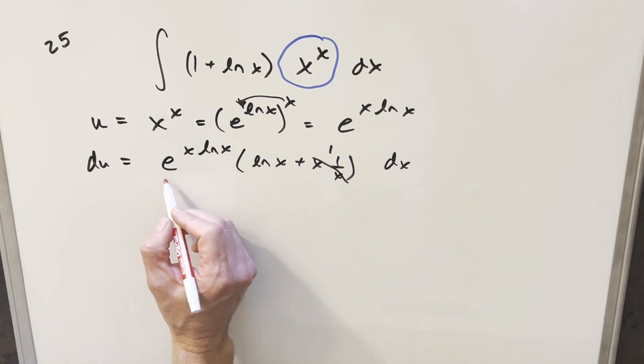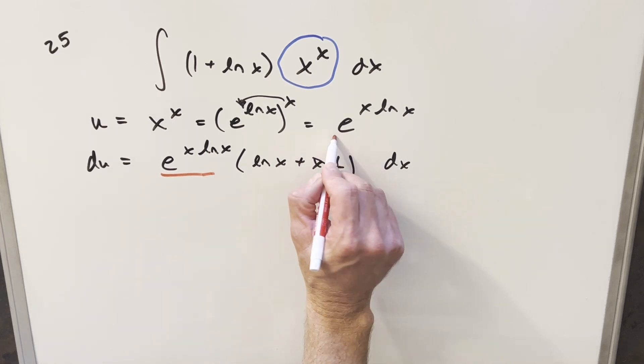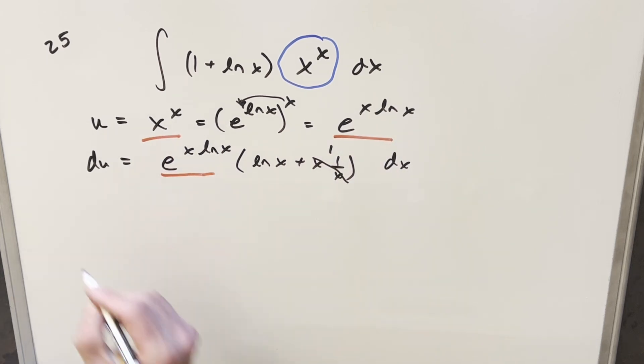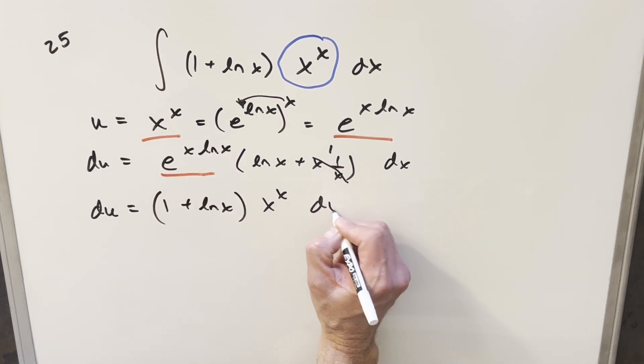And then what I can do is actually I can just rewrite things a little bit. So for this, we can kind of do this in reverse because we know that this is equal to this. So rewriting this, we'll have our du. I'm going to bring this to the front and write this as 1 plus ln x. And then putting this back in this form, I can write this as x to the x dx.